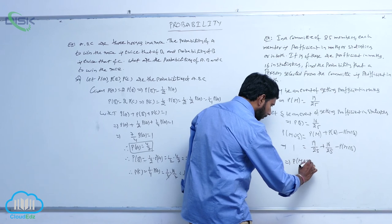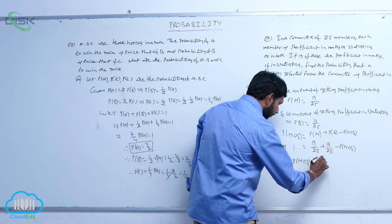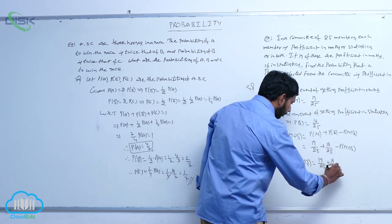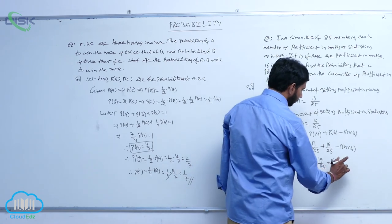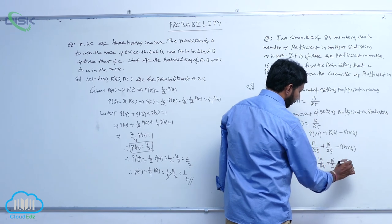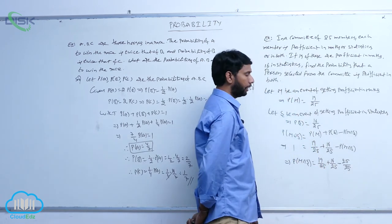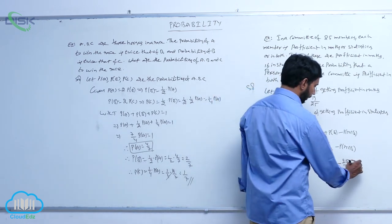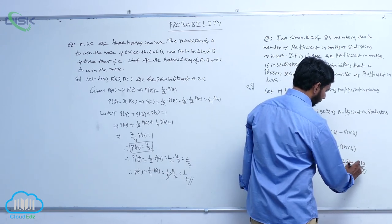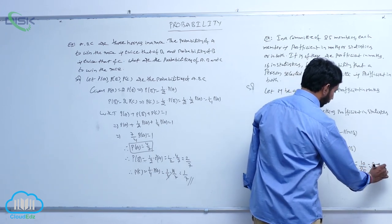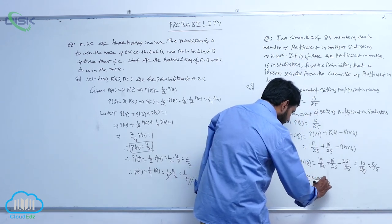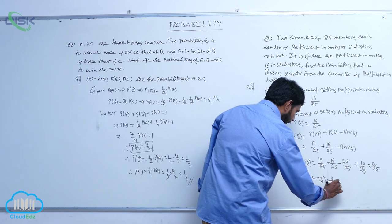That implies P(M intersection S) is equal to 19 by 25 plus 16 by 25 minus P(M union S), which equals 35 by 25 minus 1, giving P(M intersection S) equal to 10 by 25, or 2 by 5.